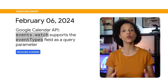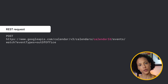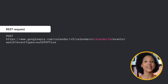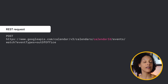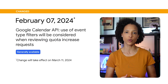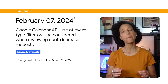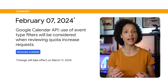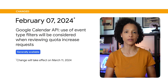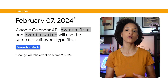The Events.Watch method now supports the Event Types field as a query parameter. This enables you to subscribe to changes about specific calendar events such as working location, focus time, or out-of-office events. The use of Event Type filters will be considered when reviewing Quota Increase requests. Before you request a Quota Increase, make sure you specify the Event Types you need as a parameter for your application. Both Events.List and Events.Watch will use the same Default Event Type filter.